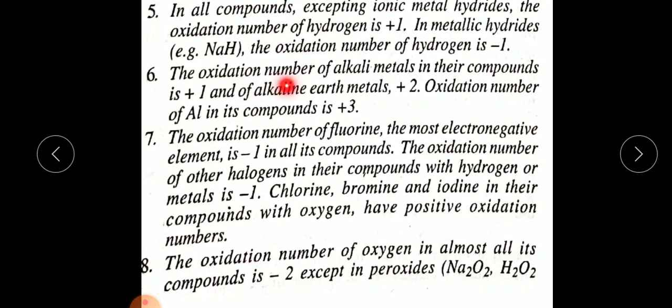Rule 6: The oxidation number of alkali metals (Group 1 elements — sodium, potassium, rubidium, cesium, francium) in their compounds is plus one. Alkaline earth metals (Group 2) have an oxidation state of plus two, and the oxidation number of aluminium in its compounds is plus three.